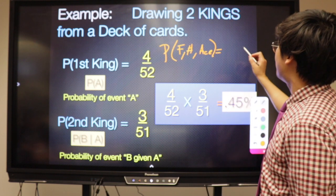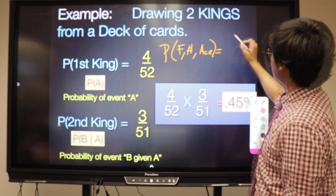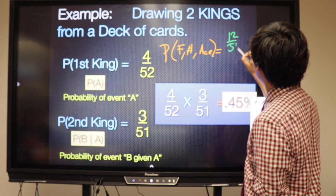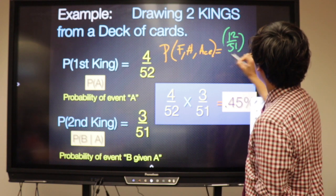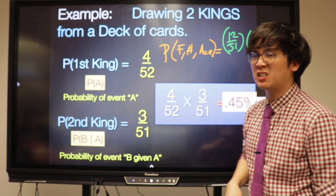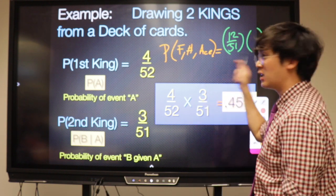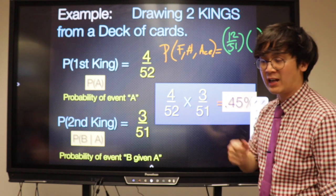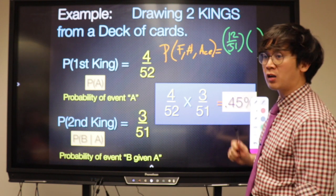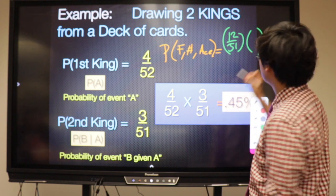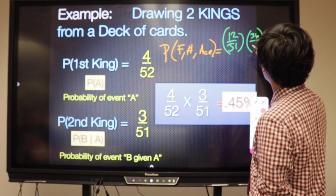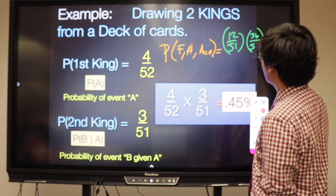Getting a face card is 12 out of 52. What about the number cards? That's 36 out of 52. And for the ace, it's 4 out of 50.